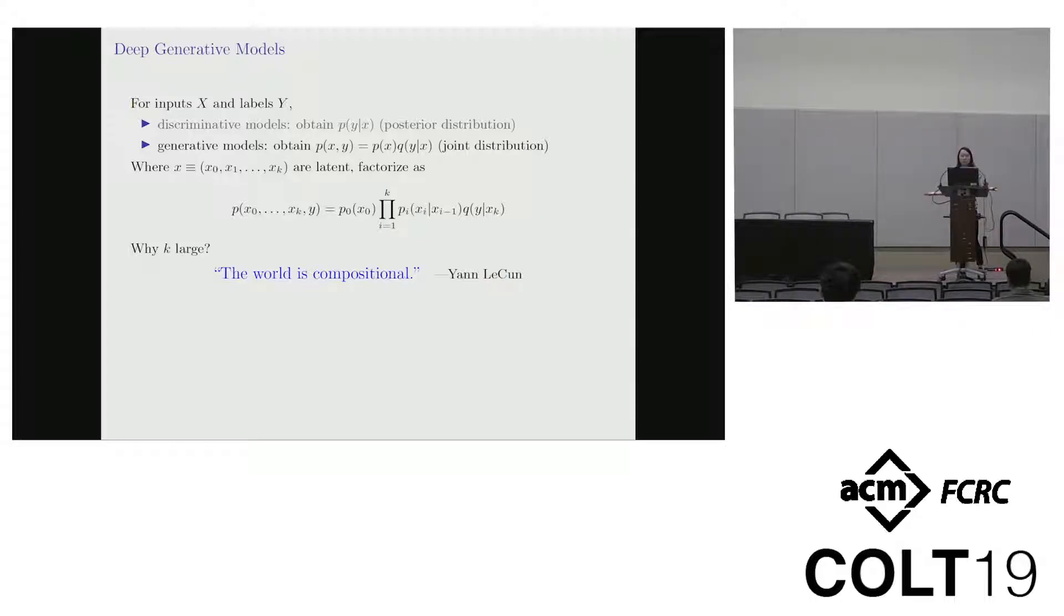Why might we want to take K large? Well, the world is compositional as Yann LeCun tells us, meaning that we can represent very complicated functions using repeated compositions of simple functions. If we have a Gaussian transition kernel, where the mean and the variance possibly are neural net functions of the previous state, then we can have very nice rich models and moreover form stochastic backprop on them.